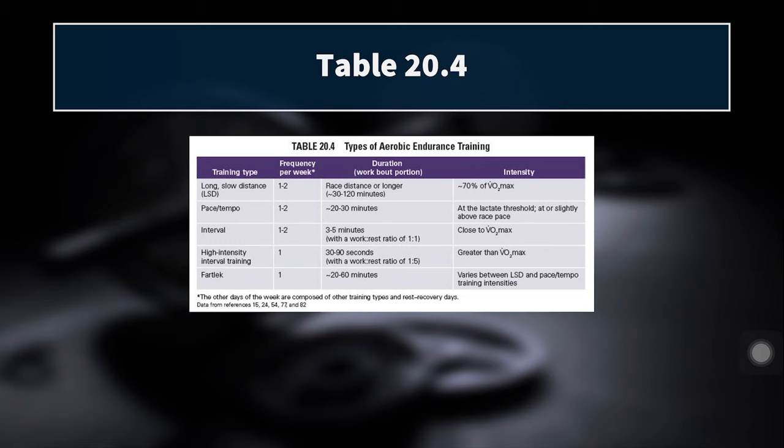In this table — table 20.4 from the text — we see some different categories of endurance training workouts: long slow distance, pace/tempo work, interval training, high intensity interval training, and fartlek training. This table gives a helpful description of frequency, duration, and intensity for each of these.